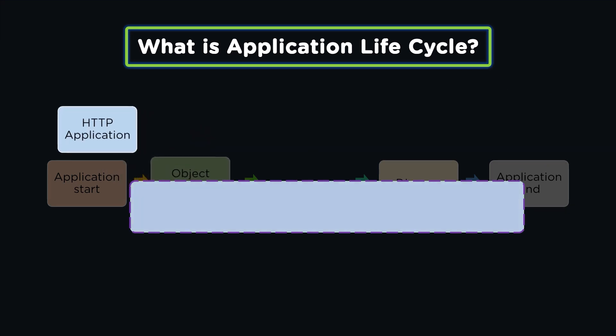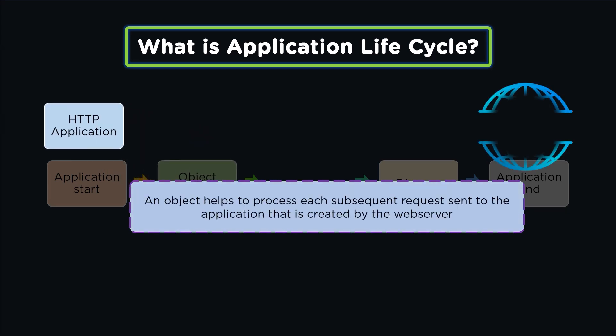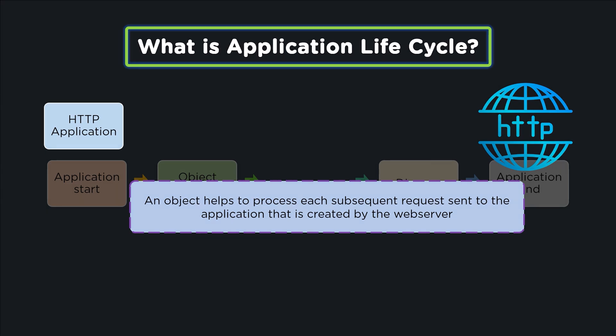The third stage is the HTTP application. HTTP application holds back all the subsequent information sent back to the user by the web server. For example, if we have two different applications — one is a gaming application and the other is a social media application — then there will be two HTTP applications created to process them.